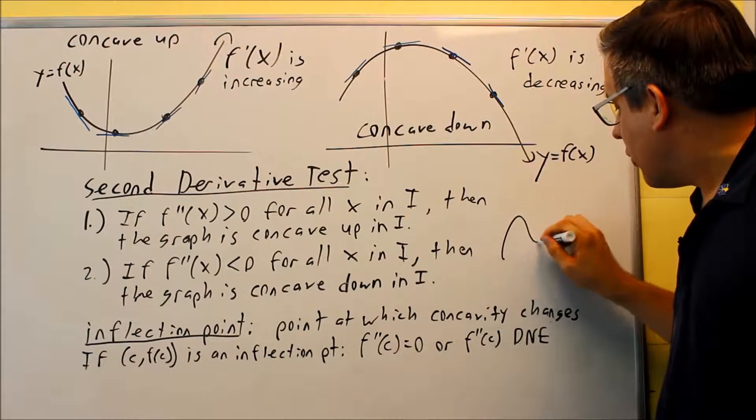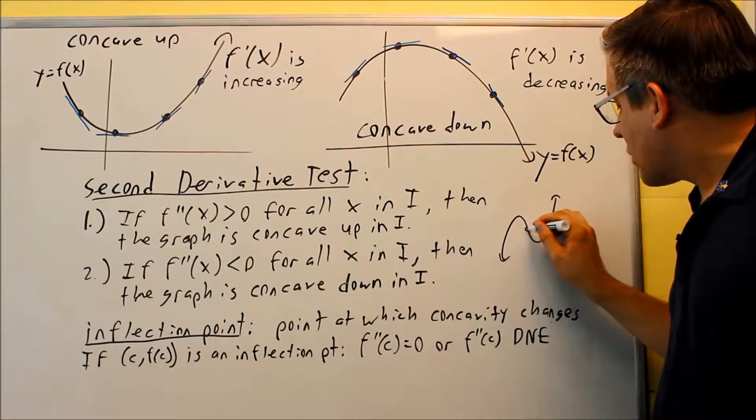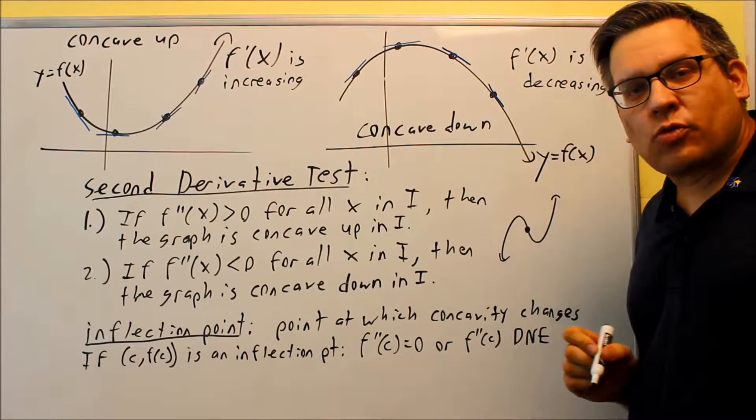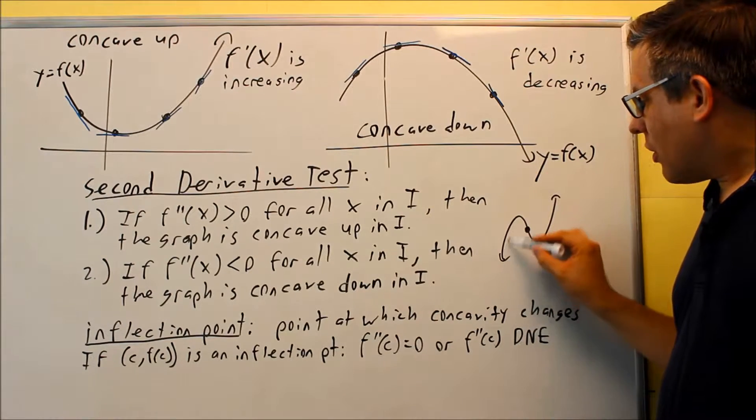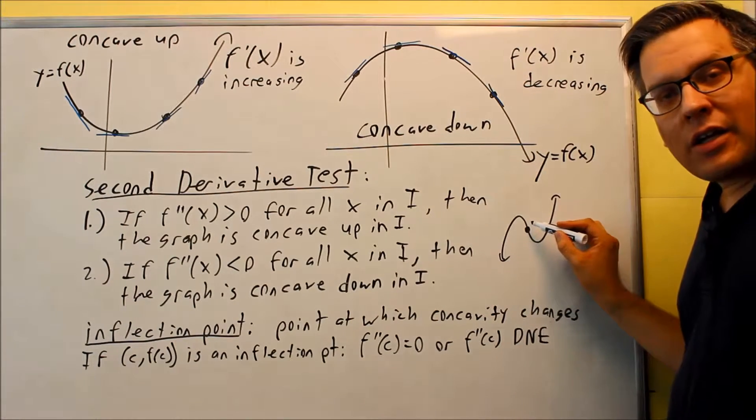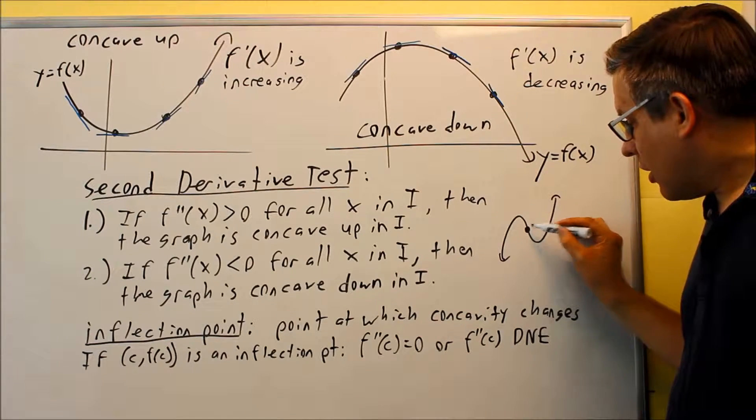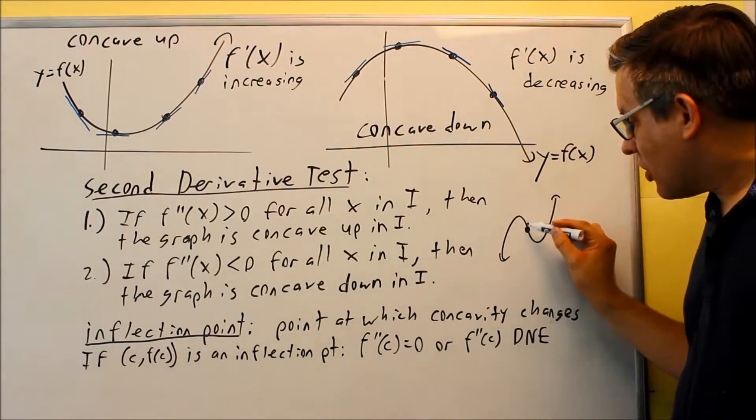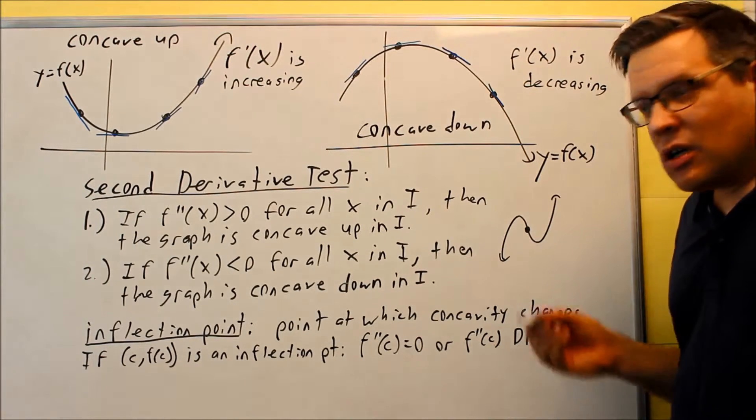Let me draw a sketch for you right here. If you have this kind of graph, that would be a place where it would have an inflection point. The first part of the graph would be concave down to here, but then the concavity changes and now it's going to be concave up.